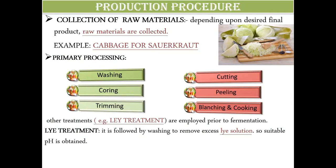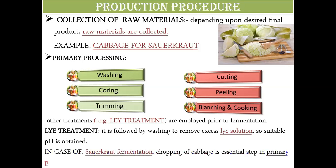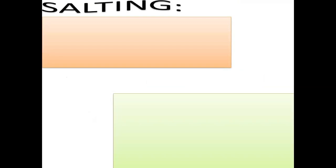Along with these processes, lye treatment is also used. Once the lye treatment is done, the vegetables are washed again to remove excess lye solution so that the desired pH is obtained. This lye treatment is done to remove extra undesirable microorganisms — it can't remove all, but it reduces their number. In the case of sauerkraut fermentation, chopping of cabbage is an essential step in primary processing.